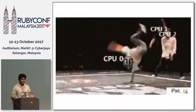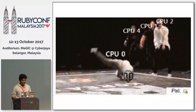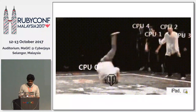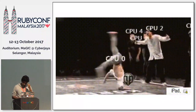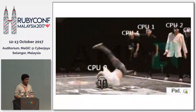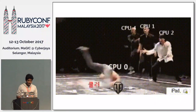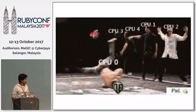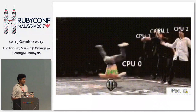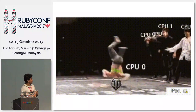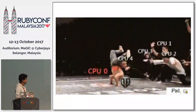Most of our applications look like this because of concurrency — we are using only one CPU, but we have 16 cores, and 15 of them are in idle state.